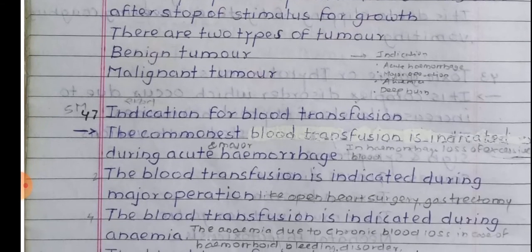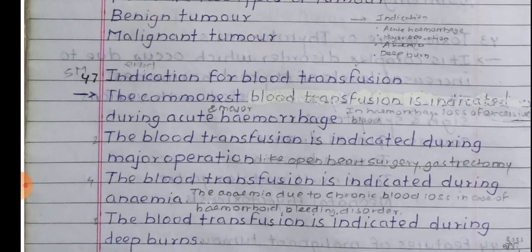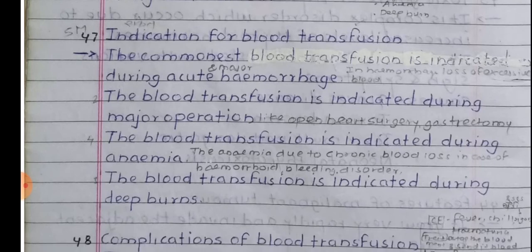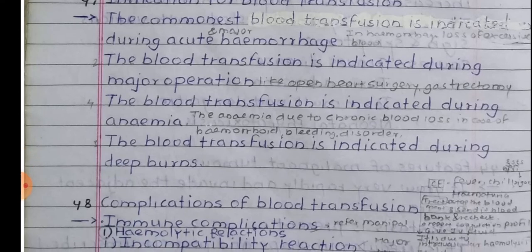Indications for blood transfusion: The most common indication is acute and major haemorrhages. Blood transfusion is also indicated during major operations, during anaemia and anaemia due to chronic blood loss in cases of haemorrhoid and bleeding disorders, and during deep burns.